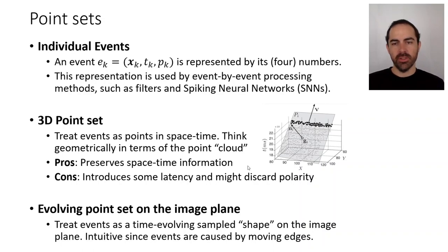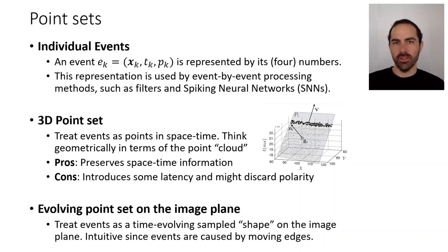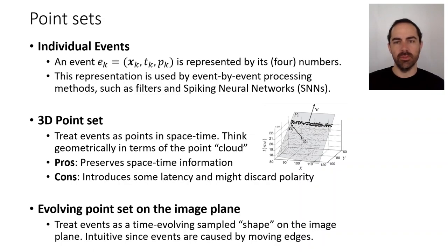Another representation is the 2D point set, where instead of a 3D point set we treat events as a time-evolving shape on the image plane. This is quite intuitive since events are caused by moving edges, and edges are also the basis of shape representation. It's more like a 2D point set rather than a 3D point set because at no point in this process do we try to use events at different times on the same pixel — that's quite rare.